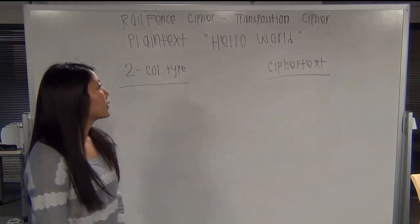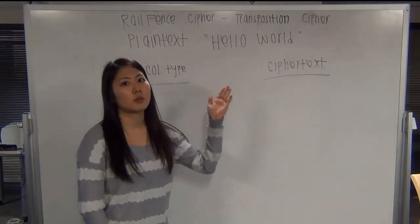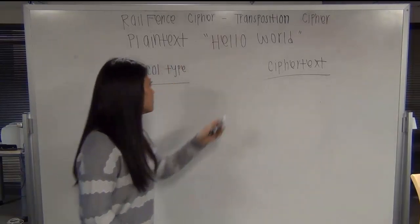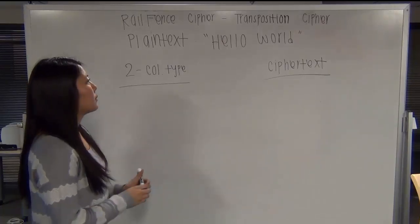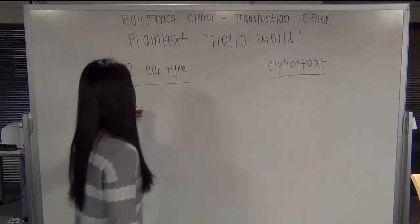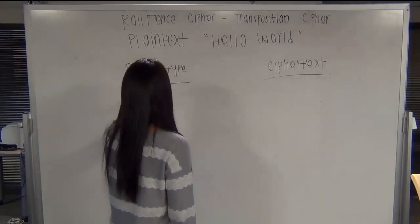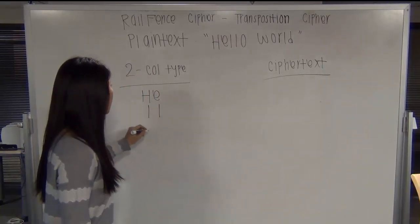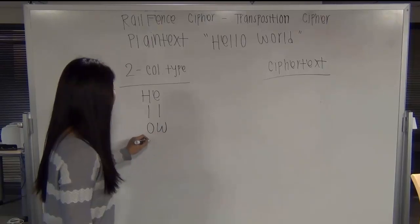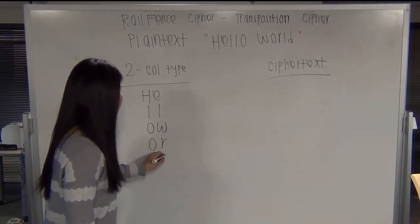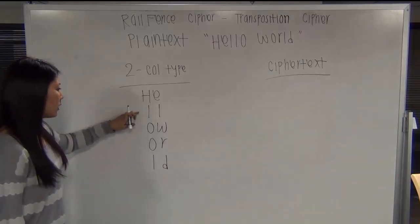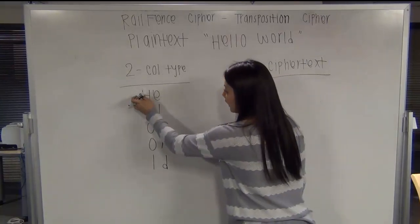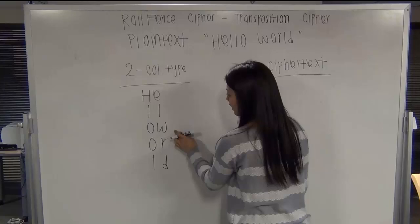So I'll show you an example of how to use a transposition cipher, which is also called the railfence cipher. So here you have a plaintext called Hello World. You can use a two-column type where you break the word up into two columns. The ciphertext is H-E-L-L-O-W-O-R and L-D. So here you have a two-column type and then as a ciphertext you can read it as H-L-O-O-L-E-L-W-R-D.